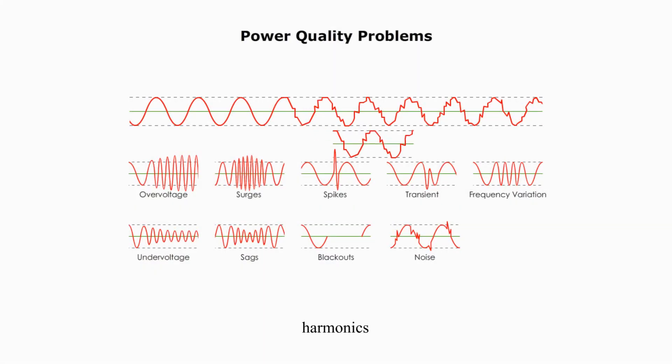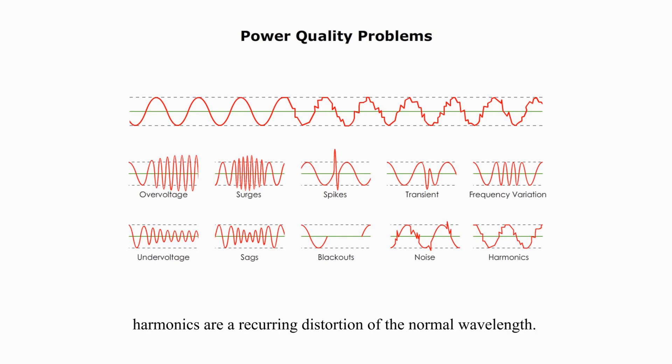Last but not least, harmonics. Harmonics are unwanted high-frequency which superimposed on the fundamental waveform creating distorted wave patterns. Harmonics are a recurring distortion of normal wavelength.